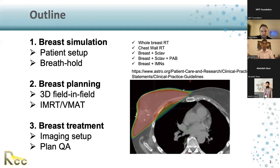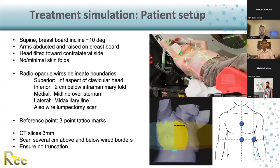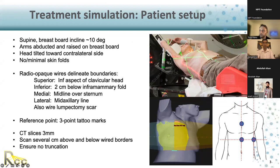Let's talk about patient setup and how we do things at UCSF. Most cases are treated in supine position with a breast board that's slightly inclined — typically we use 10 degrees, although that can be adjusted. Arms are usually raised and bent onto our breast board as shown here. We tilt the head towards the contralateral side, opposite the side we're treating, and we ensure that there are minimal skin folds when setting up the patient.